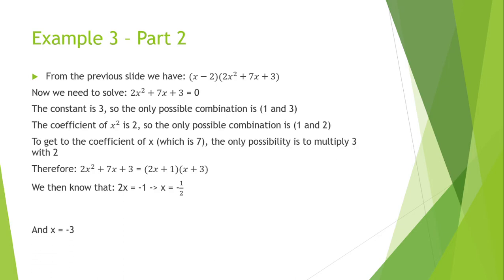So by solving this, we get that x equals minus a half and x equals minus 3. So if we substitute this into the initial equation, we get this. So we have three solutions for x: 2, minus a half, and minus 3.